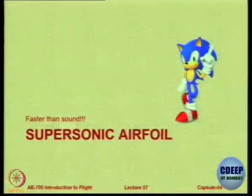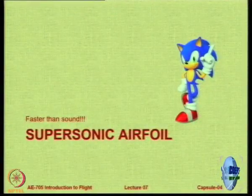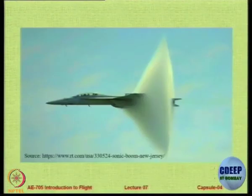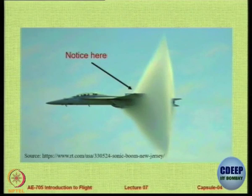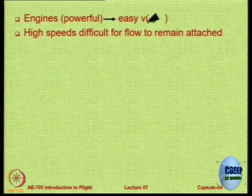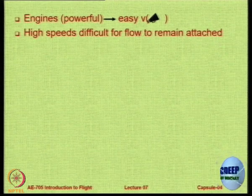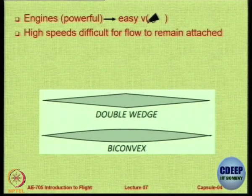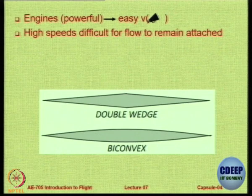Let us look at aerofoils designed for aircraft that fly very fast — faster than the speed of sound. When you fly at a speed greater than the speed of sound, you will have a shock wave, and you have to have provisions in the aerofoil to handle shock waves. At high speeds it is very difficult for the flow to remain attached because of shock wave–boundary layer interaction. Typically, aerofoils used for supersonic aircraft are double wedge or biconvex.